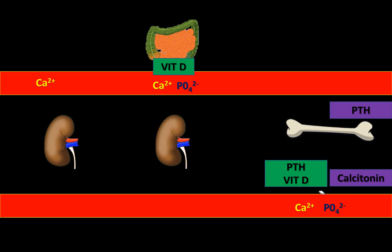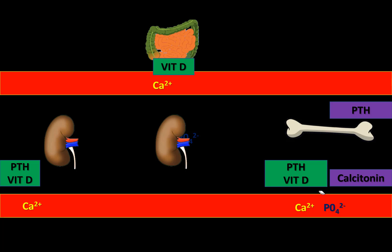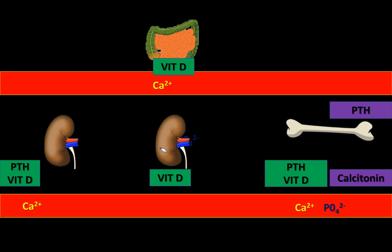Calcium is normally filtered at the glomerulus and reabsorbed in the distal convoluted tubule with the help of both vitamin D and parathyroid hormone. Phosphate is filtered at the glomerulus and reabsorbed in the proximal convoluted tubule with the help of vitamin D, but this reabsorption is prevented by parathyroid hormone.